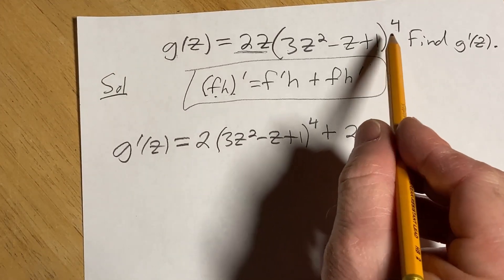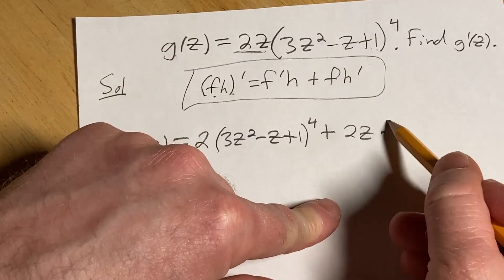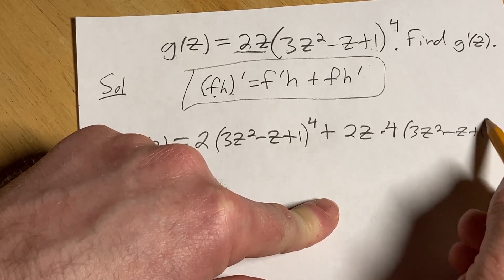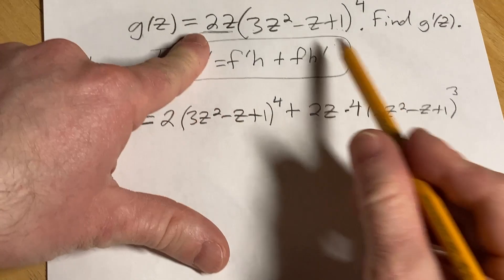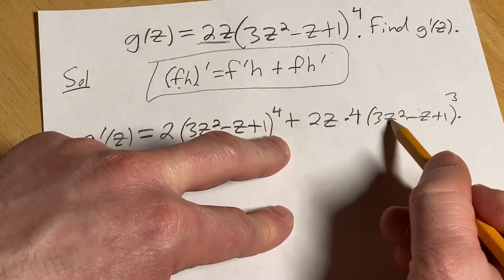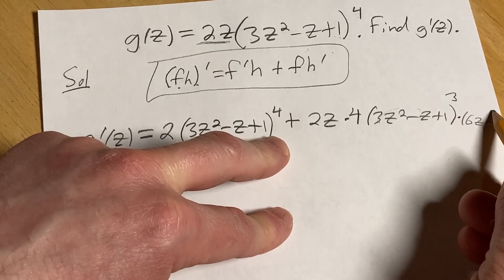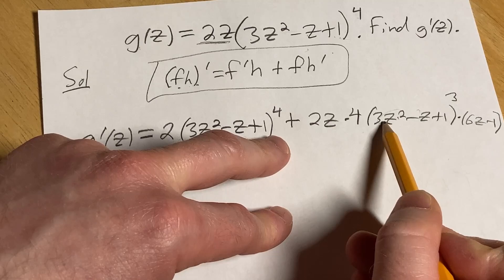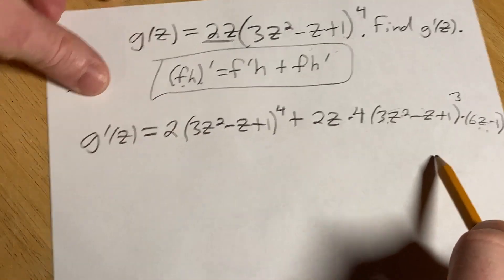So here's where we use that chain rule because we have an inside function here. So we bring down the 4, leave that inside function untouched, subtract 1 from the exponent. So far, all I've done is take the derivative of the outside, left the inside untouched, times the derivative of the inside, which is going to be 6z minus 1. Because 2 times 3 is 6. Subtract 1 from the exponent. So you're going to get 6z minus 1.